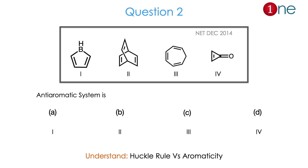Question number 2. They give four compounds: one is borine in a cyclopentane ring, a bicyclic system, a cycloheptane which is in triene form, and a cyclopropyl with a ketone. So you have four alkenes with different conjugation levels and different ring sizes. They are asking which one is anti-aromatic — whether one, two, or three. You have to know Huckel's rule, count the pi electrons, and assess the conjugation. From the structures and possible answers, the question is really about Huckel's rule versus aromaticity. The answer is A.